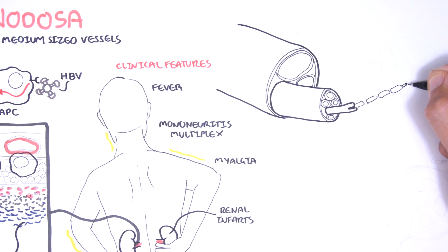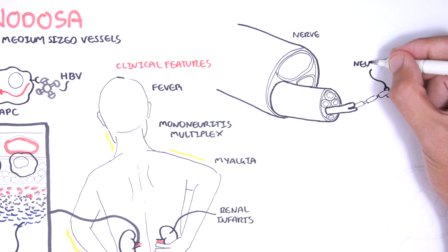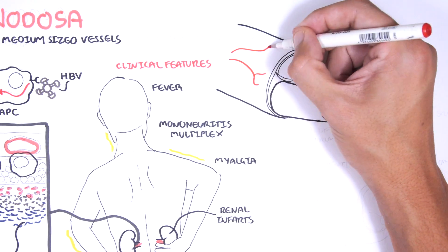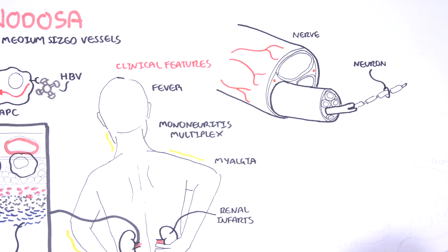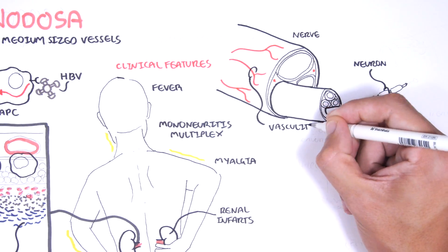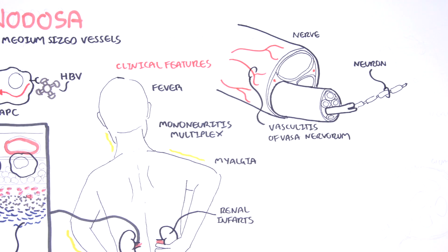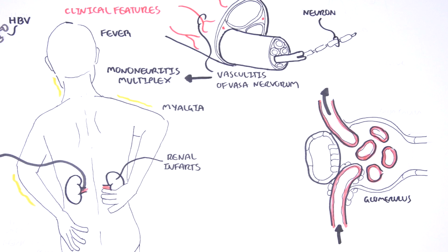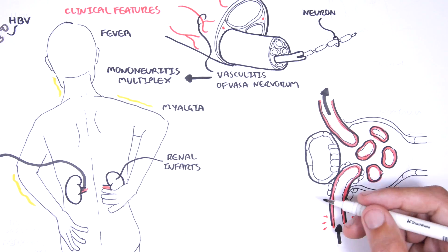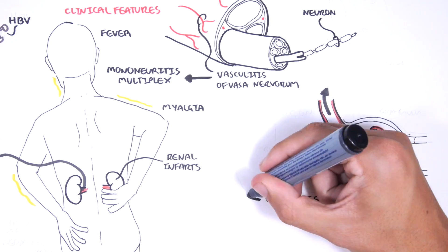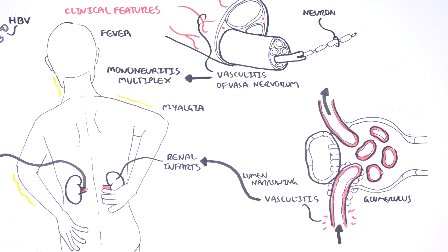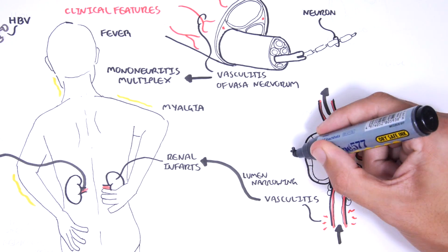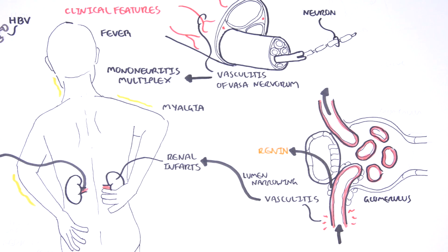Mononeuritis multiplex, also called multiple mononeuropathy, refers to an anatomical pattern of peripheral neuropathy that affects two or more different nerves. It is thought to be due to inflammation and occlusion of the vasa nervorum — the blood vessels that supply the nerves. Another feature of polyarteritis nodosa is involvement of the renal artery, which can lead to renal infarction due to inflammation, as well as hypertension secondary to activation of the renin-angiotensin-aldosterone system.